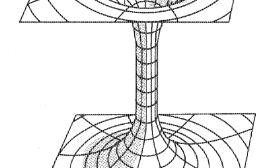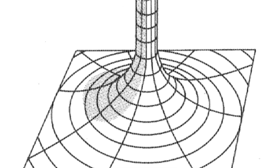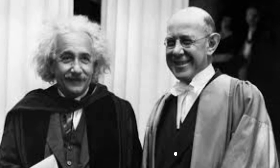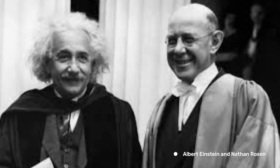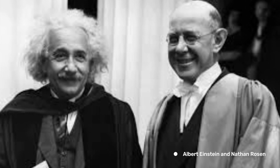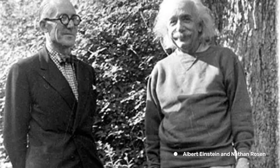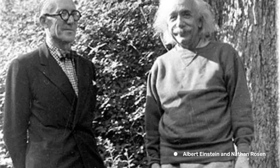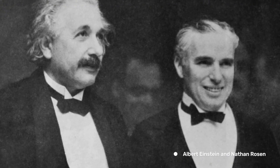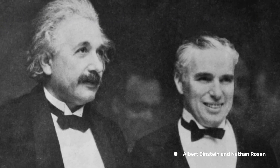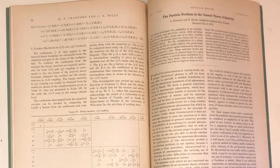The theoretical foundation of wormholes can be traced back to 1935, when Albert Einstein and his collaborator Nathan Rosen proposed the idea of what would later be called an Einstein-Rosen bridge, in their seminal paper 'The Particle Problem in the General Theory of Relativity.'